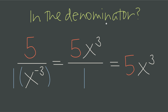So we've expanded our understanding of negative exponents and the instruction to flip upside down or take the reciprocal. When we see a negative exponent in the numerator, we know to move it to the denominator. Now we know that when we see it in the denominator, we move it to the numerator.